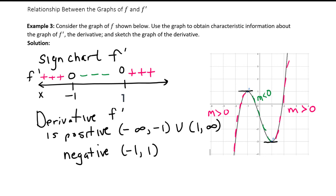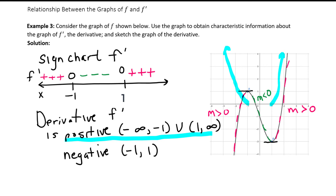We'll use this sign chart information to sketch the graph of the derivative. A positive function value means it is above the x-axis — so from negative infinity to negative 1, and again from positive 1 to infinity, the derivative is above the x-axis. Between negative 1 and positive 1, the derivative is negative, so it is below the x-axis. That should look a little bit more like a parabola. Where there is a horizontal tangent line to the graph, the derivative is 0 — that happens at x equals negative 1 and again at x equals 1.